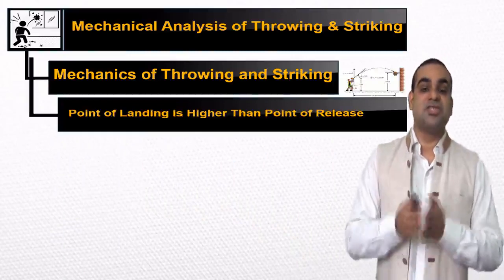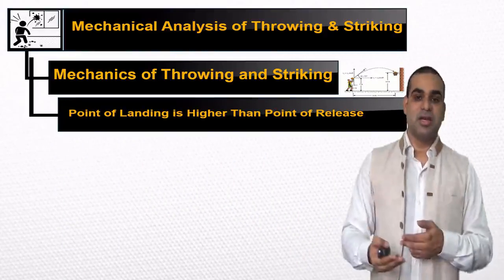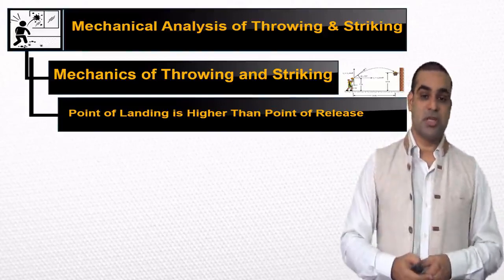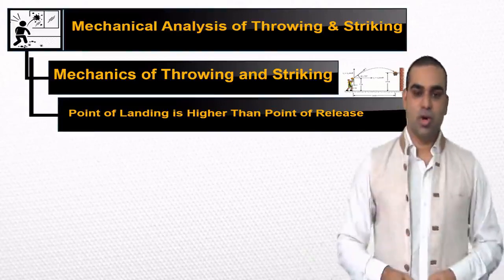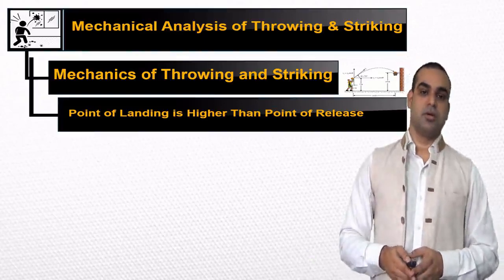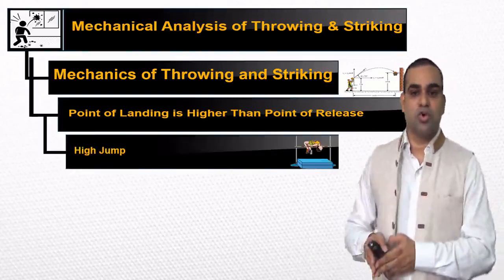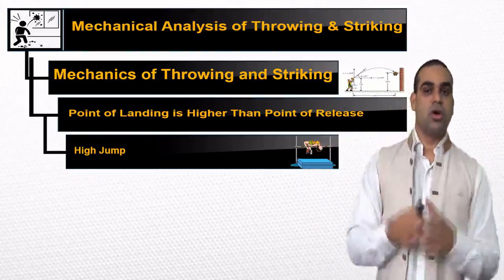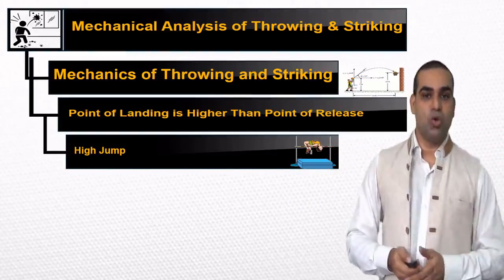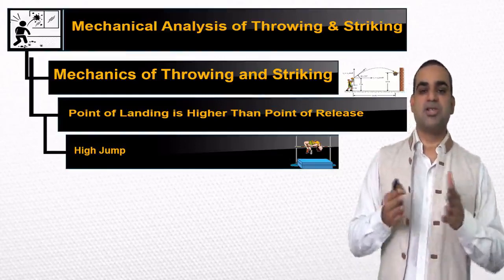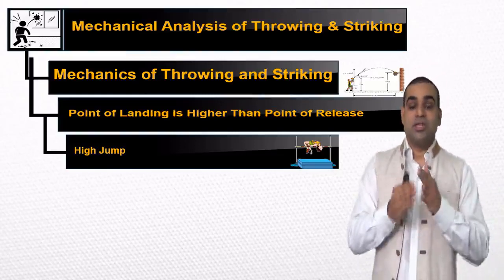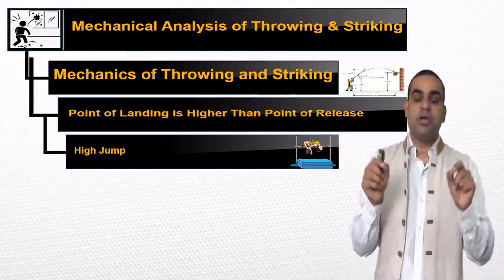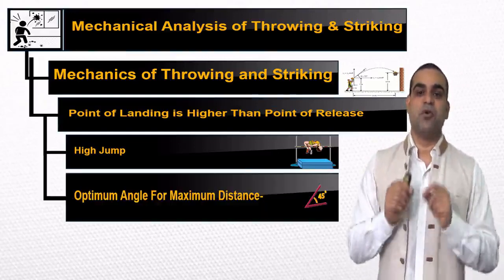The third situation is when the point of landing is higher than the point of release. This situation in sports is very rare. A typical example is shooting in basketball — the aim is fulfilled when the ball gets into the basket. The same applies to the high jump, where the aim is to clear the bar and land on the pit with your back, and in pole vault also. When not considering air resistance, we require the optimum angle of projection, which should be 45 degrees.